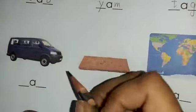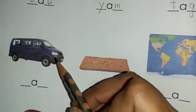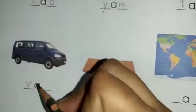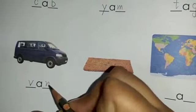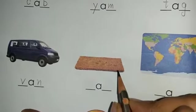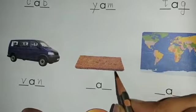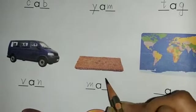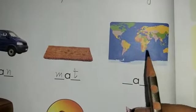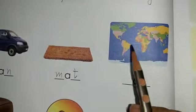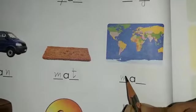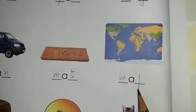Now let's come up to the next picture. What is this? This is a van. V-A-N, van. Now this one — this is there in our home also, on the door. Yes, this is a mat. M-A-T, mat. Now the next one. What is this? You can see different countries on this. Yes, this is a map. M-A-P, map.